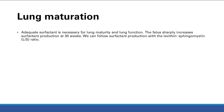Surfactant is very important for lung maturity and function. The fetus slowly makes its surfactant — it's not present from the start. The fetus has to produce it, and surfactant production sharply increases at 30 weeks gestation.